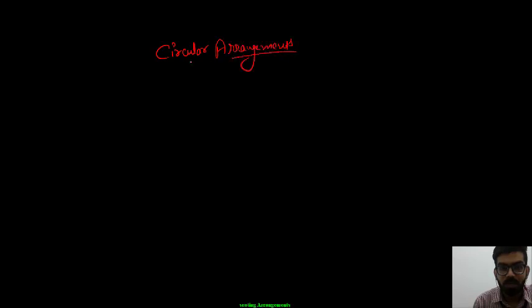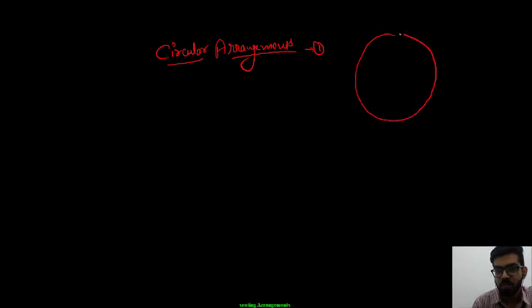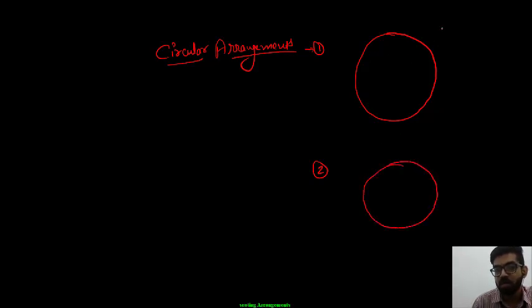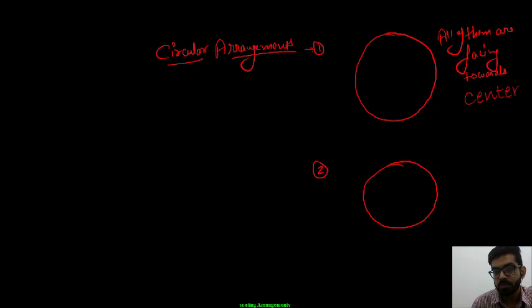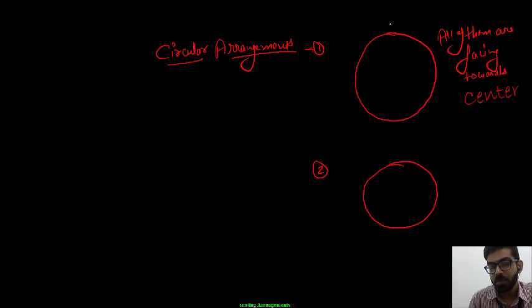Now let's see the case of circular arrangements. In circular arrangements, there are again two types of questions. In type number one, a number of persons sit on a circle and all of them are facing towards the center. In type number two, a number of persons are sitting in a circle but all of them are facing outwards the center, meaning facing outside. We are taking a random number of persons sitting in the circle.